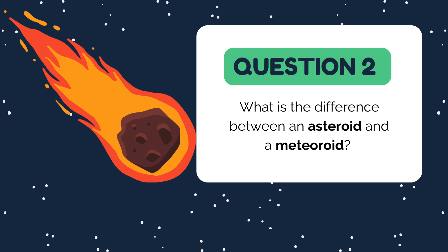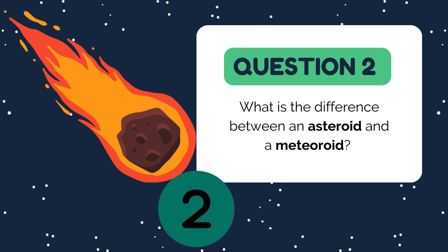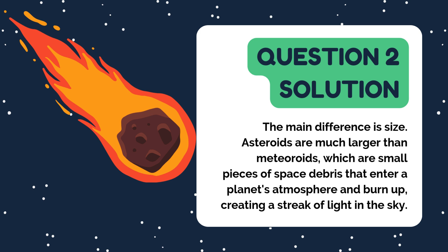Next up, a question to clarify something many people get confused about. What is the difference between an asteroid and a meteoroid? The key difference is size. Asteroids are much larger chunks of rock and metal that orbit the sun. Meteoroids, on the other hand, are smaller fragments, often broken off from asteroids or comets. When meteoroids enter a planet's atmosphere and burn up, they create those beautiful streaks of light we call meteors.